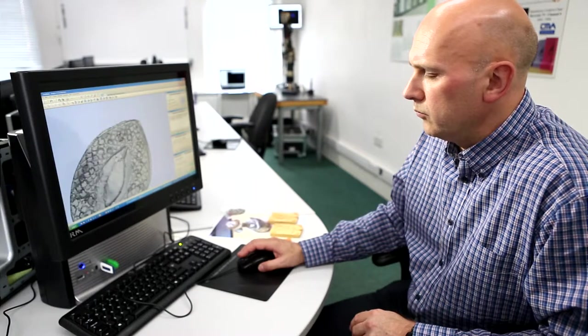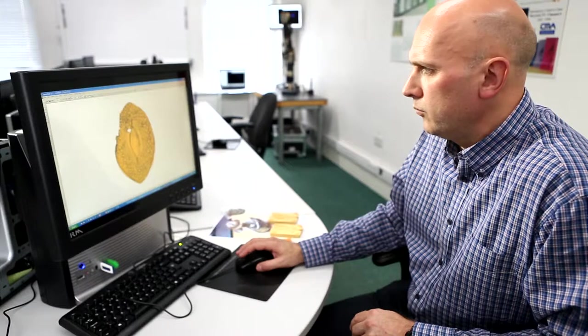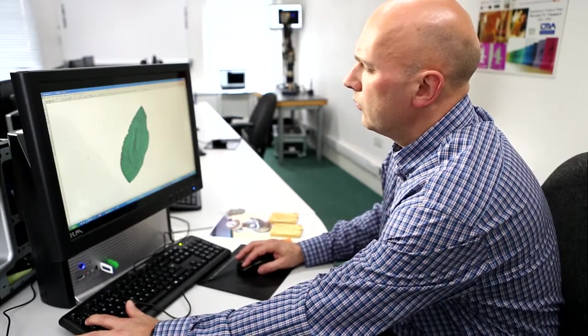Once we've got that scan data, which is basically a mesh and a very difficult object to manipulate, we can bring it into our specific design software that we use here at the JIIC. Once we've got that object in, we can start retracing the curves and all the fine details we need to recreate on the object.